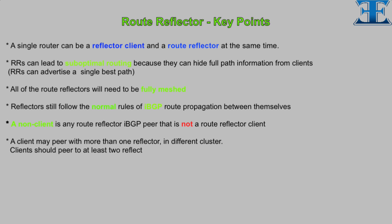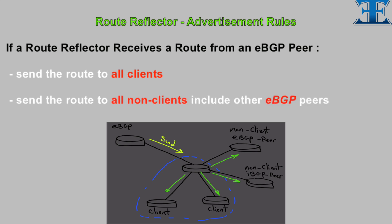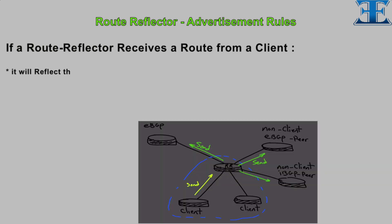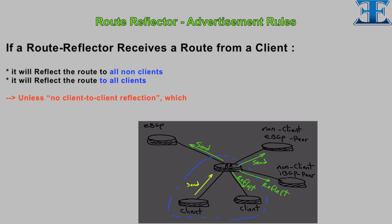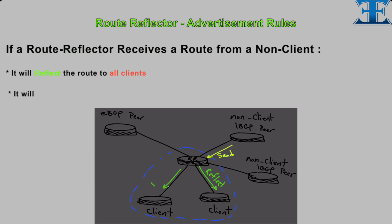Clients should peer to at least two reflectors to provide redundancy, but two is enough. Advertisement rules — Rule 1: Client-to-client reflection is configured, which is rarely deployed, and it will send the route to all eBGP peers. Rule 3: If a route reflector receives a route from a non-client, it will reflect the route to all clients and it will send the route to all eBGP peers.